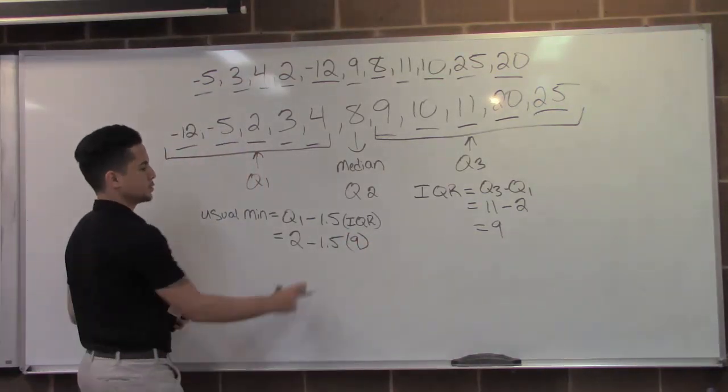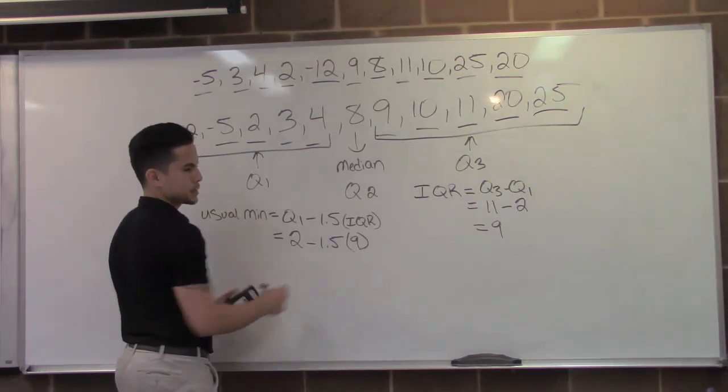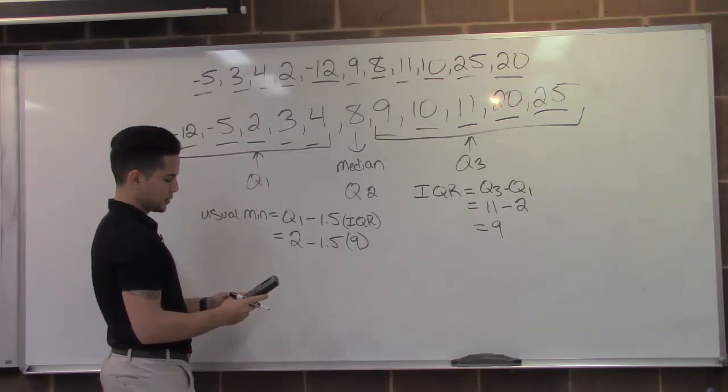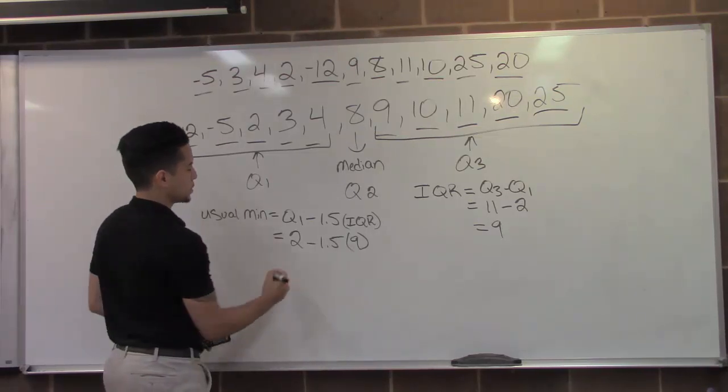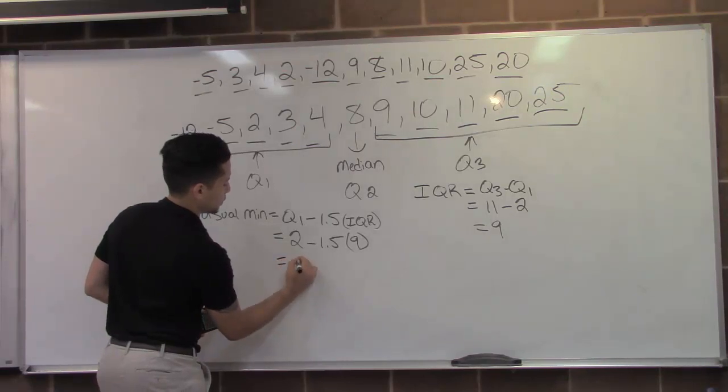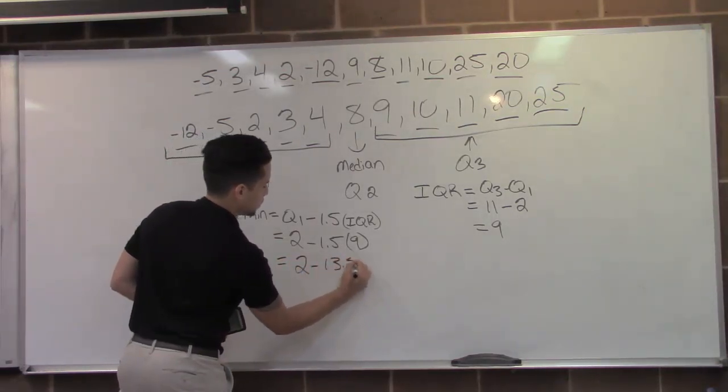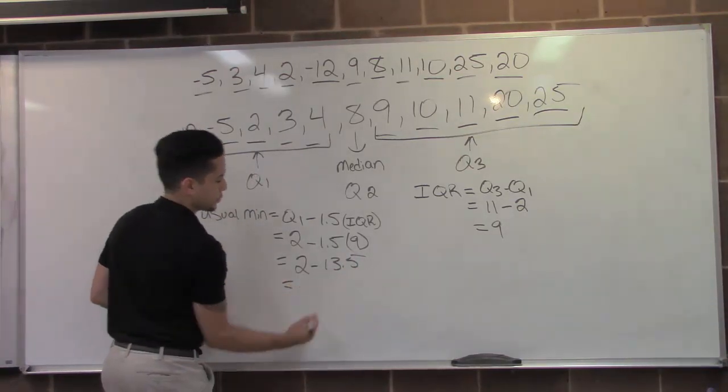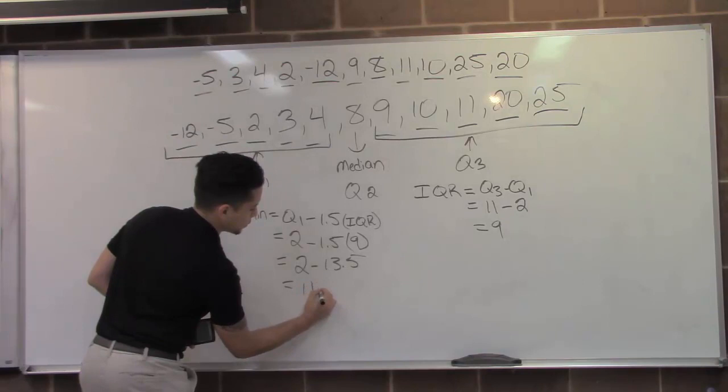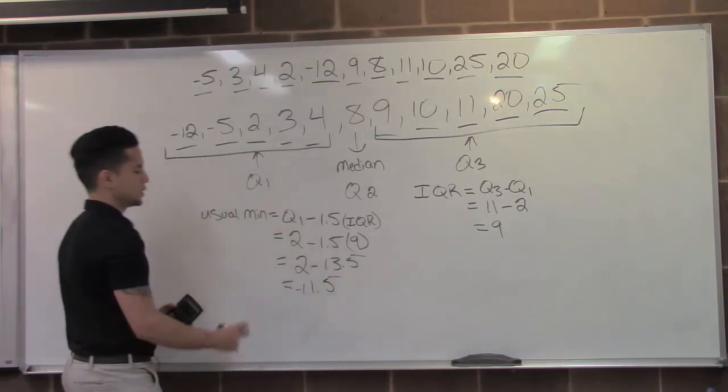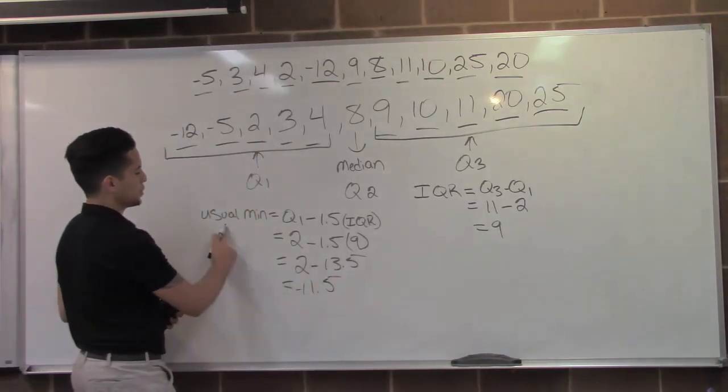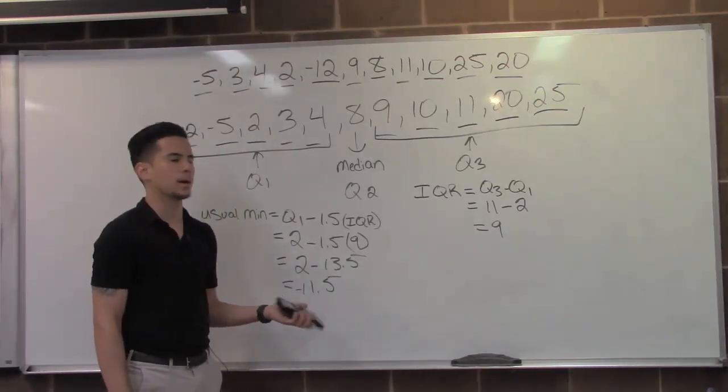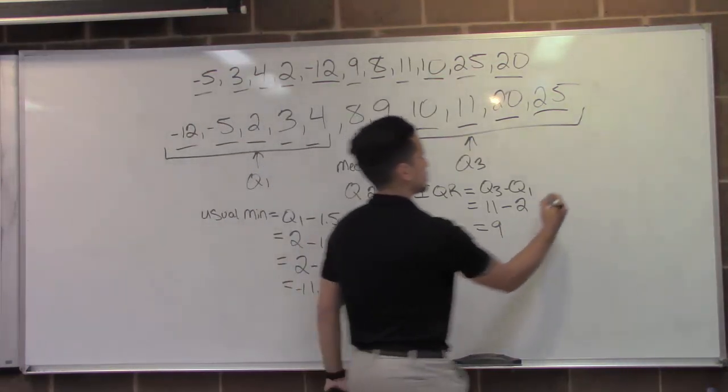From here, we do 1.5 times nine, which gives us 13.5. And we continue solving, so two minus 13.5 would give us negative 11.5. This will give us our usual min, and we're going to do the same thing to find our usual max.